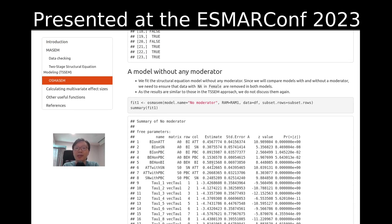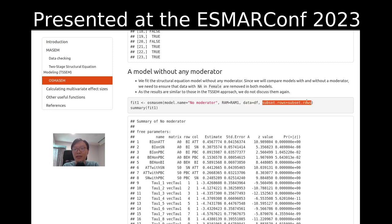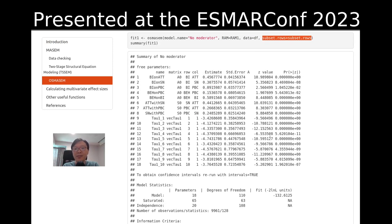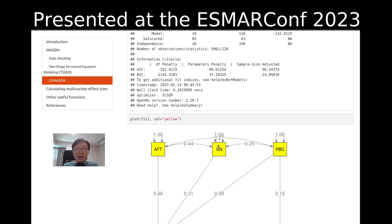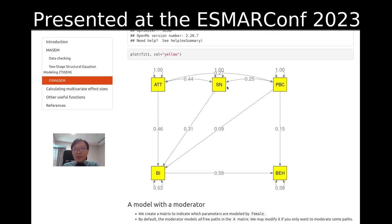In the first step, we run a model without any moderators, fitting a structural equation model using the one-stage approach, labeled as no-moderator. We provide the RAM model, the data frame, and the subset rows to indicate which rows to include. The outputs are almost identical to the two-stage approach, and we can also check the graphical output, which should be similar.